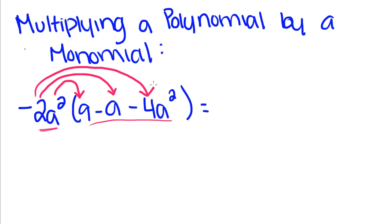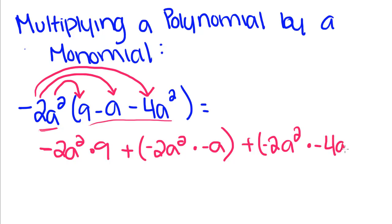I'm going to write it out the long way first, but you don't have to do this every time. This is just for practice. I'm going to take this term times 9 plus negative 2a squared times negative a, and then negative 2a squared times negative 4a squared.